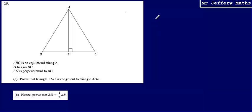This is question 16 from a series of videos taking a look at the Edexcel practice papers. Here we're told that ABC is an equilateral triangle. We're told that D lies on BC, that AD is perpendicular to BC.